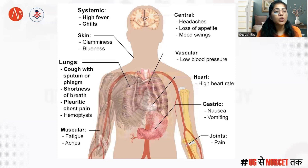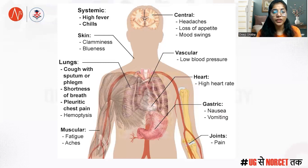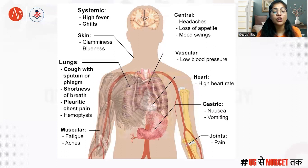Talking about the skin, there would be clamminess and blueness — what we usually call cyanosis — because gas exchange is not occurring properly, the cells are not getting enough oxygen, and that leads to cyanosis.